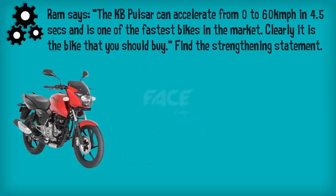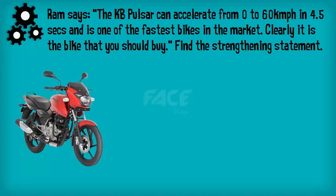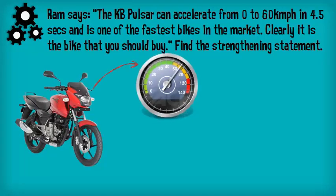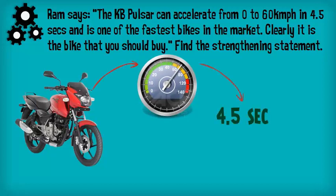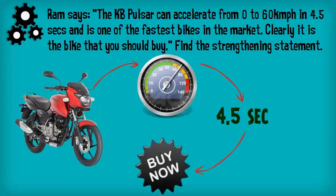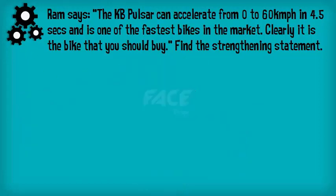Ram says the KB Pulsar can accelerate from 0 to 60 km per hour in 4.5 seconds and is one of the fastest bikes in the market. Clearly, it is the bike you should buy. Which of the following statements most strengthens Ram's argument?